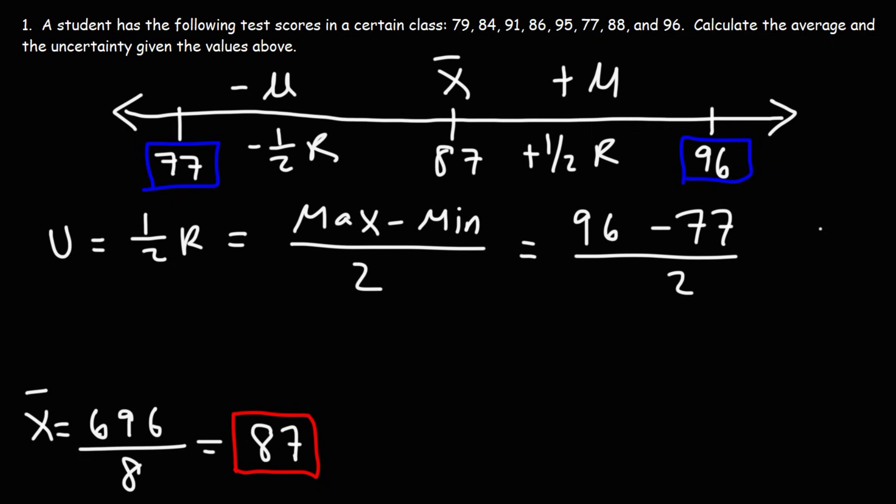96 minus 77, that's 19. 19 divided by 2 is 9.5. So that's the uncertainty in this particular example problem.